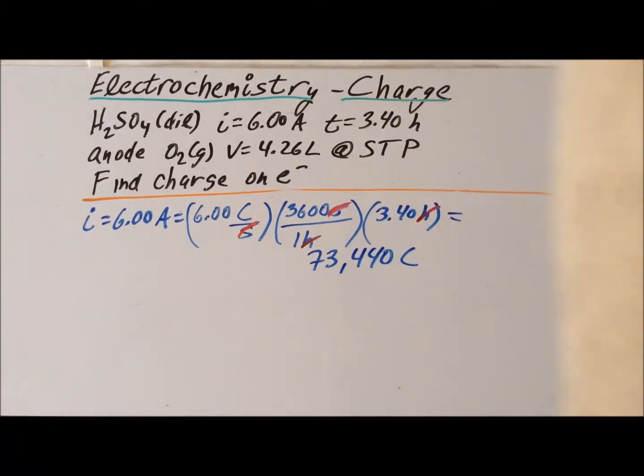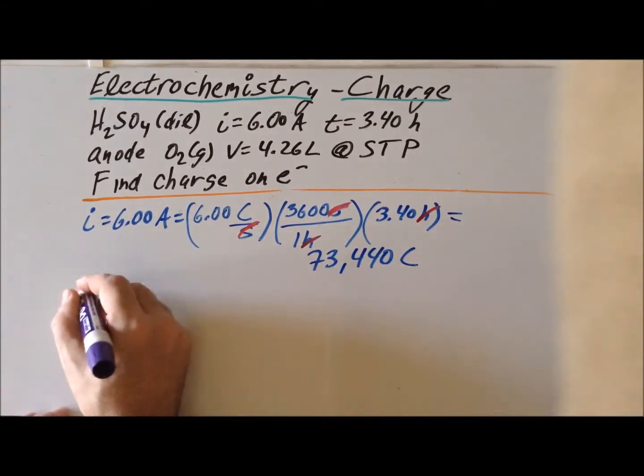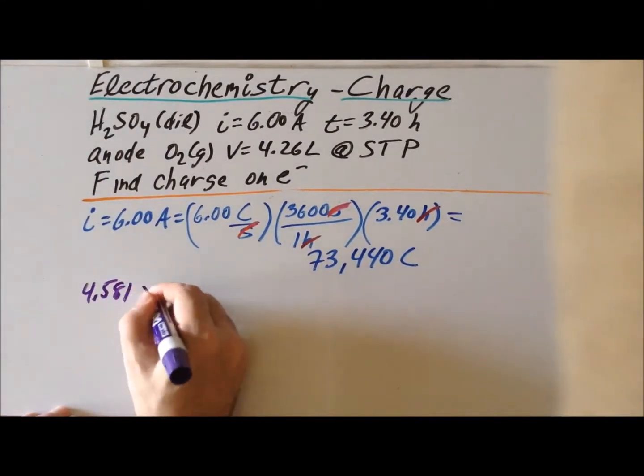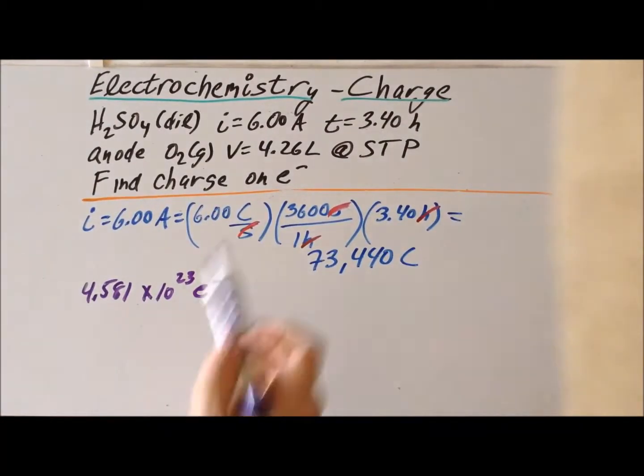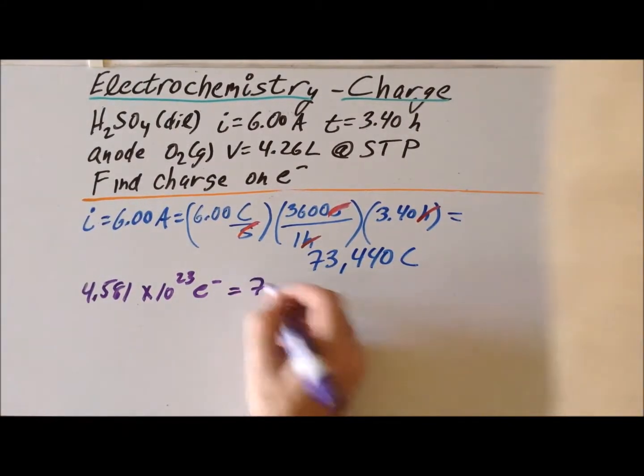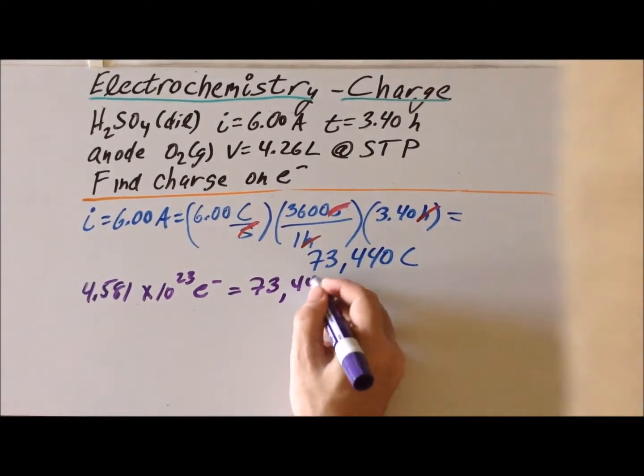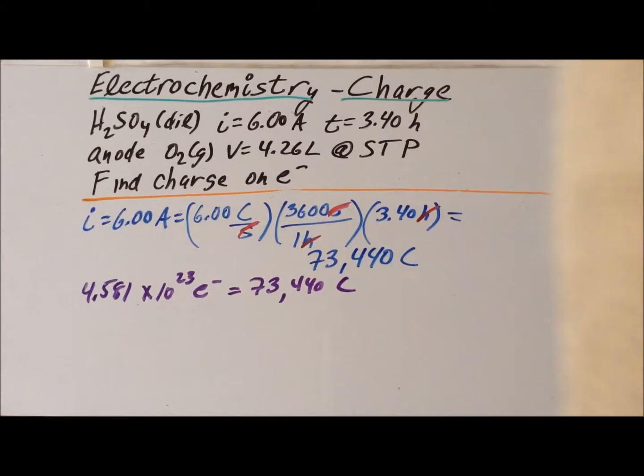From the experimental data regarding the oxygen and the relevant half cell reaction, we were able to determine the total number of electrons that were involved in this reaction, which was 4.581 times 10 to the 23rd electrons. On the other hand, from the current and time information, we were able to work out the entire amount of electrical charge that was transferred. And that worked out to be 73,440 coulombs. So we see that this number of electrons has this total charge in coulombs.